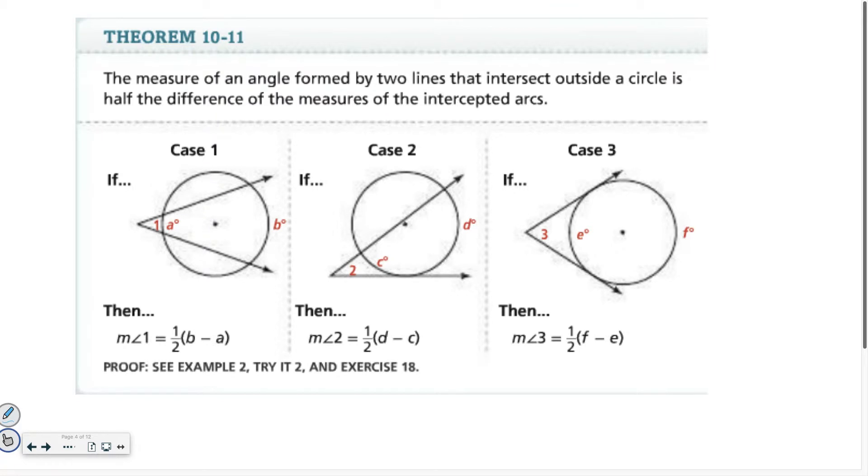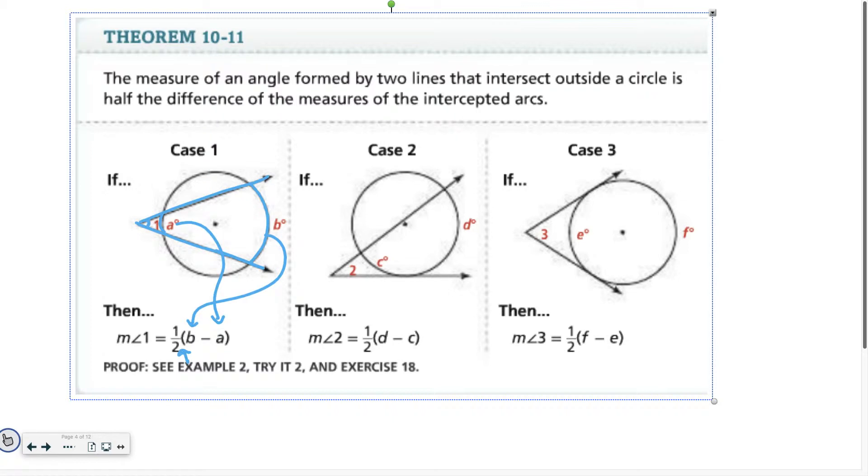Case 1: If it intersects and it looks like this, in order to solve for angle 1, this angle formed outside of the circle, you take your farthest arc and you subtract your closer arc. Once you have a number there, then you multiply by one half. Same idea here. If I'm solving for angle 2, I take my arc that's farther and subtract the one that's closer, and multiply by one half. You can see that that picture looks just a little different because one of the lines looks like it's a tangent. It doesn't go through the circle. Then the other one does.